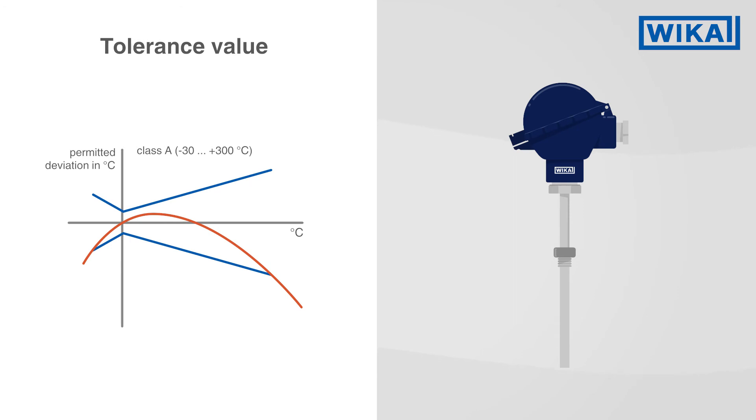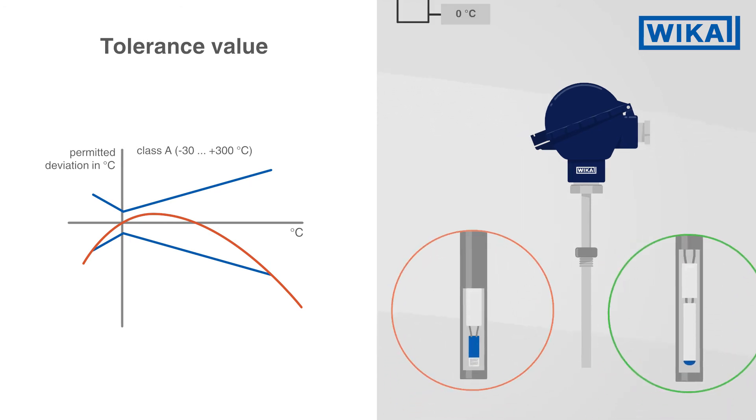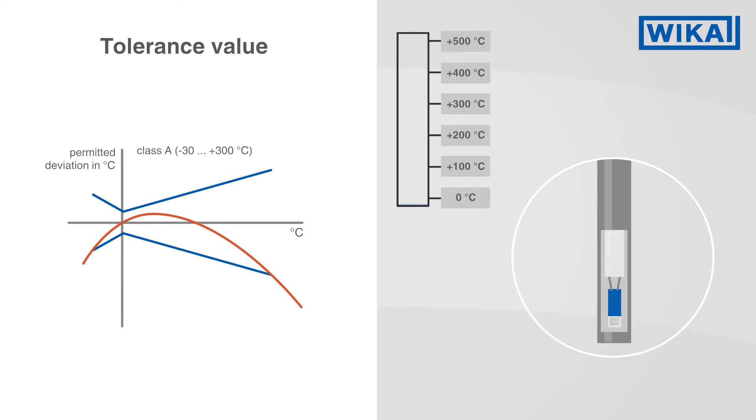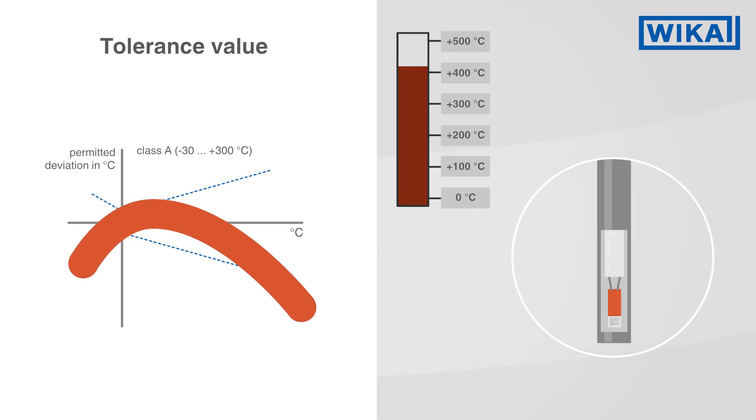This effect is more pronounced with thin film resistors than with wire wound sensors. If a resistance thermometer is used outside its measuring range, damage to the measuring resistor cannot be ruled out, and the accuracy of the measured value within its measuring range can no longer be guaranteed.